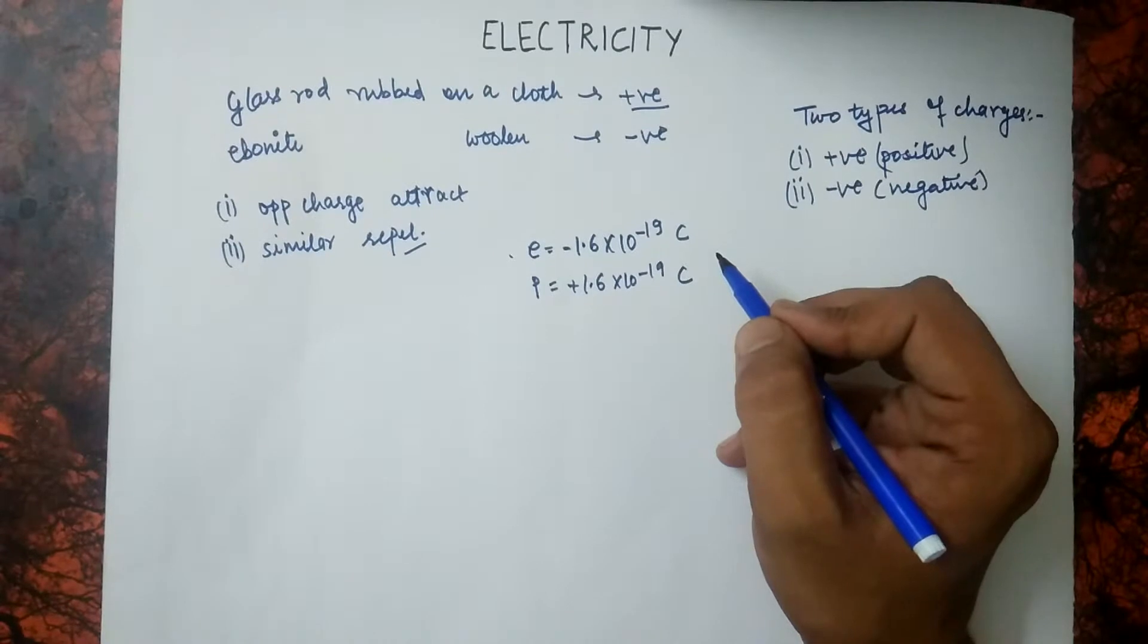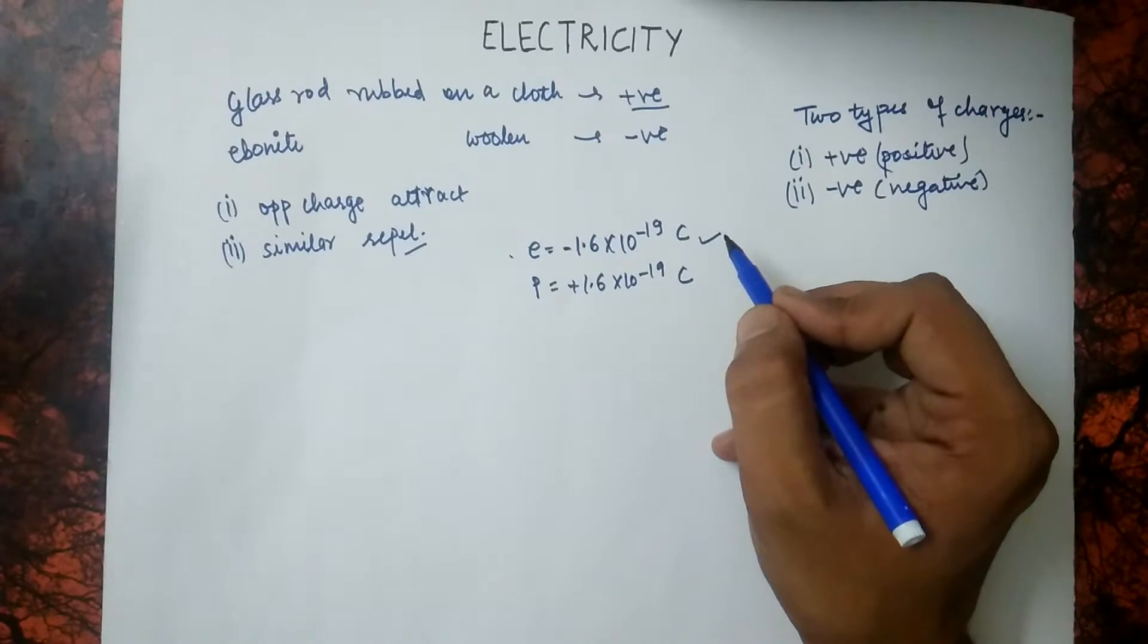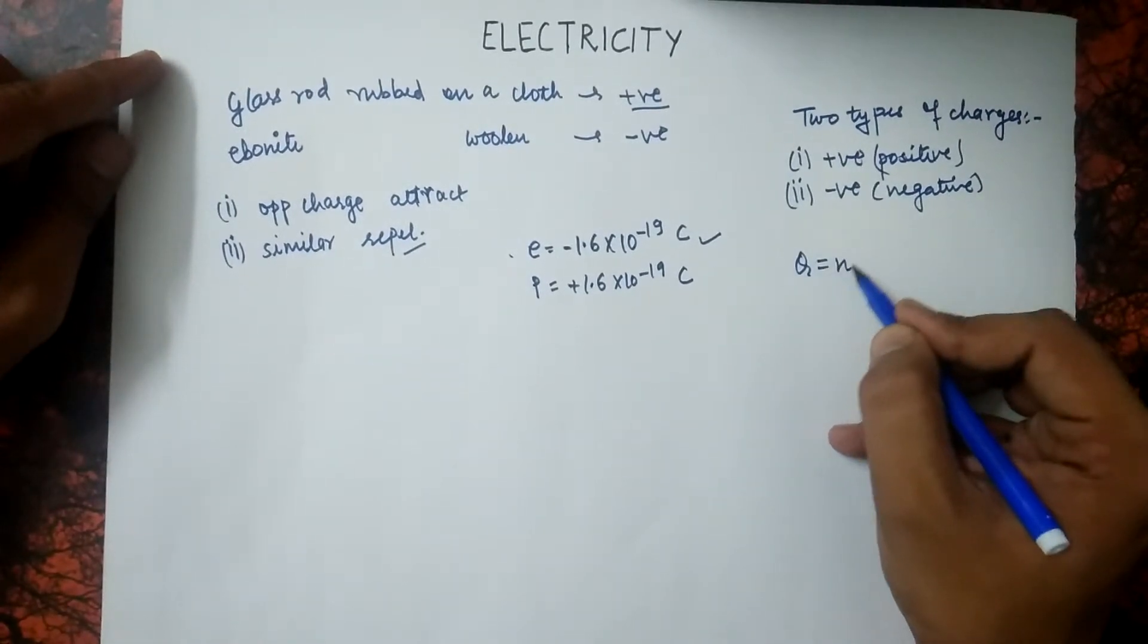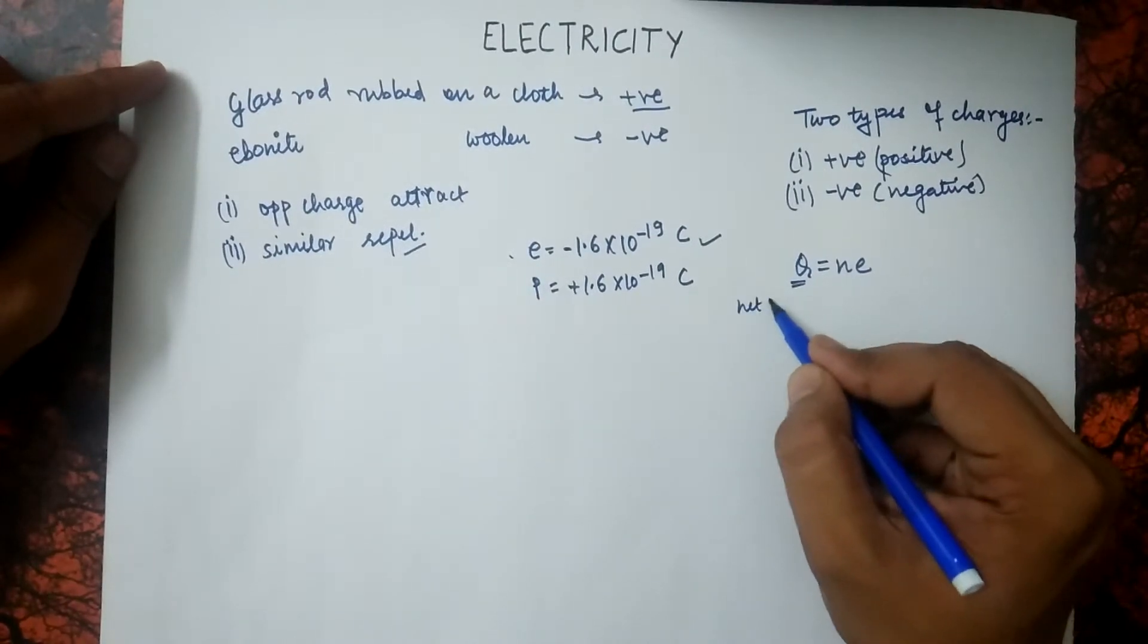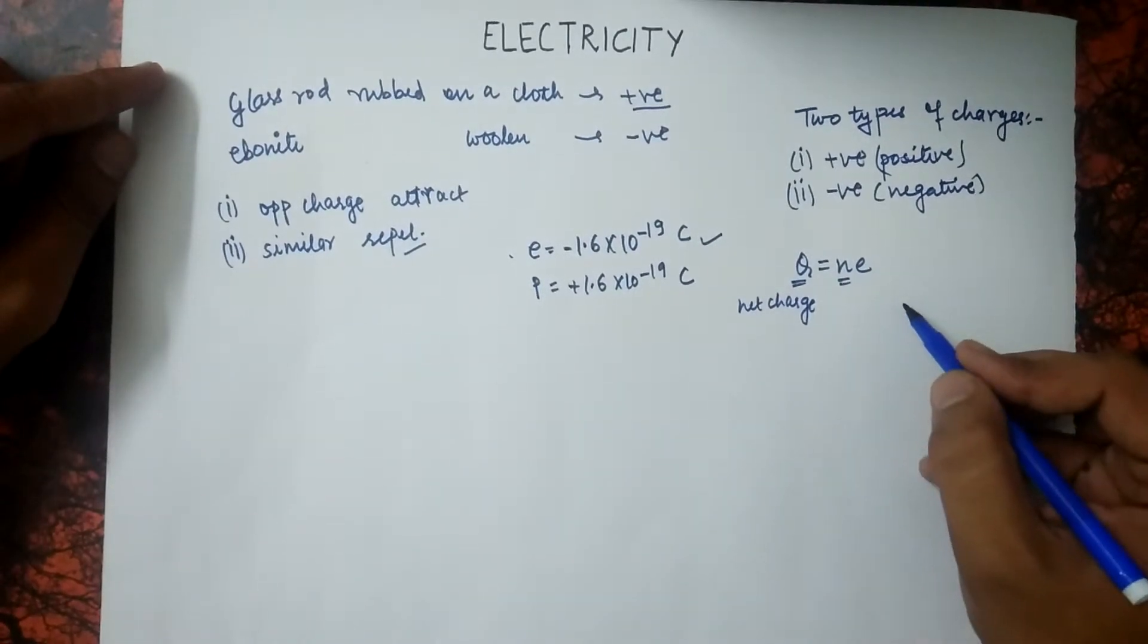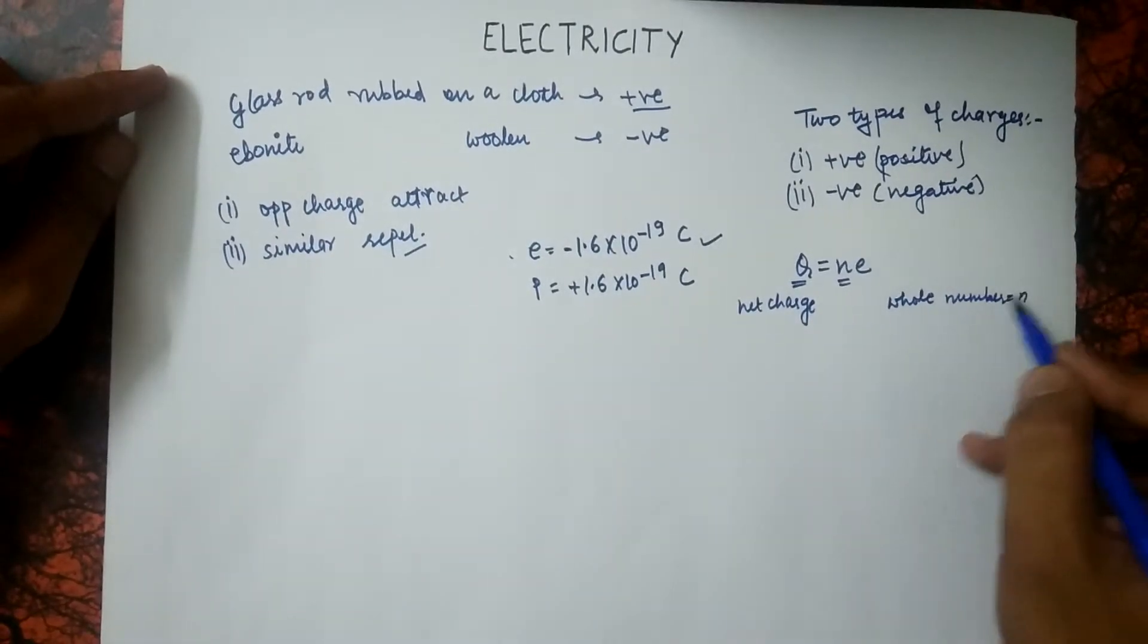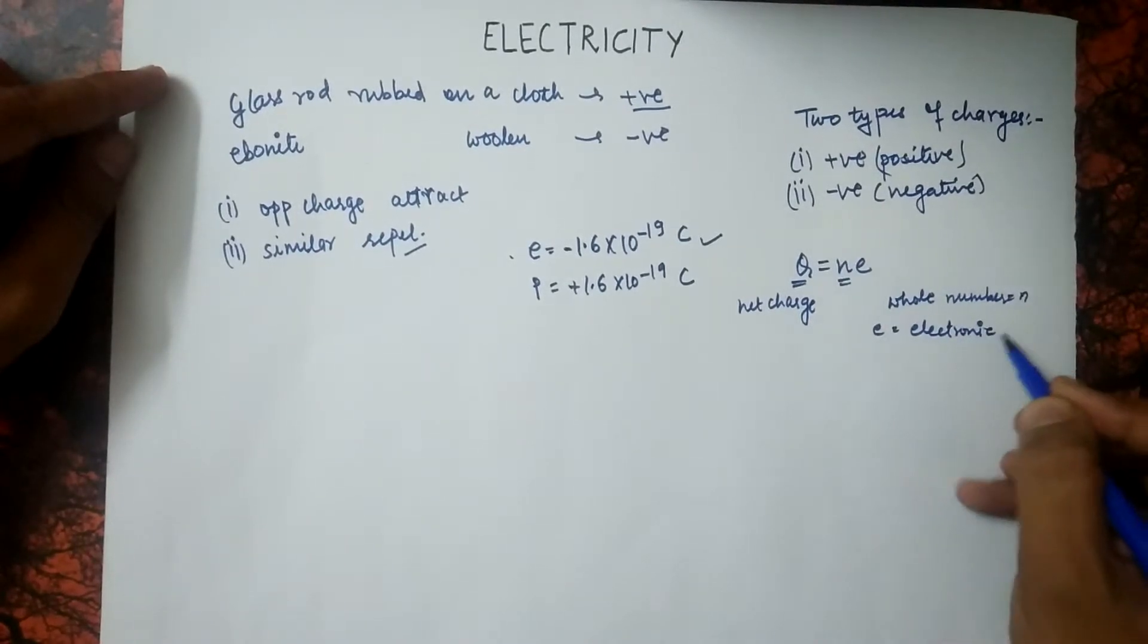Now, how can we define the charge occupied by an object or any substance? It is given by a formula Q equals to NE. Here, Q is the charge, net charge. N is the number, it is in whole number. And E is the electronic charge.